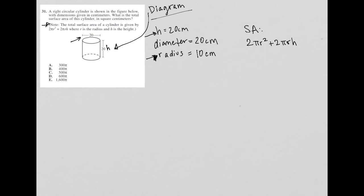So all I'm really doing now is substituting h and r into this formula for surface area. Let's write that down. So I have 2π, instead of r squared, I'm going to say it's 10 squared plus 2π, instead of r it's 10, instead of h we have 20.